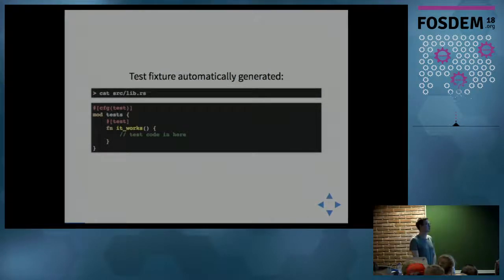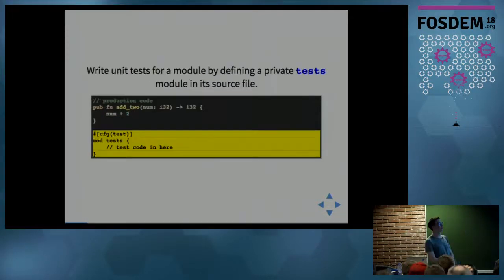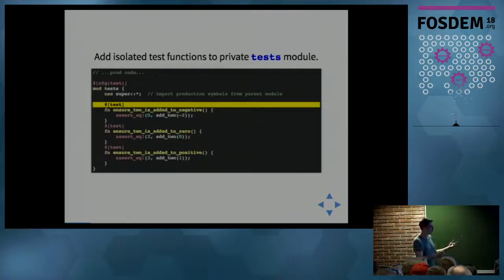If we had some production code, say in this lib.rs file, here we have add2 that adds 2 to an integer. We can write tests for this function by defining a private test module in the same source file and annotating it with CFG test, which tells Cargo to only build this code in the test build, not in a production binary.